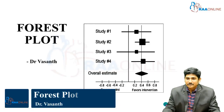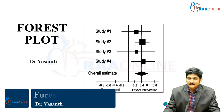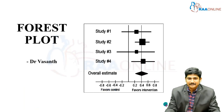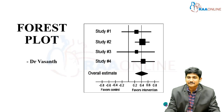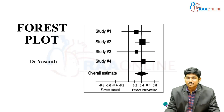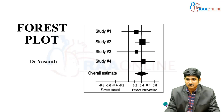Welcome. Today we are going to see a concept called the forest plot. Most of the time we come across questions like whether an intervention can be made or not — for example, can a steroid be given for a particular condition? One study will say yes, another will say the steroid is contraindicated, another says it can be given only to a particular population, and another says there is limited harm. This kind of varied results can be seen when you analyze many studies asking the same question.